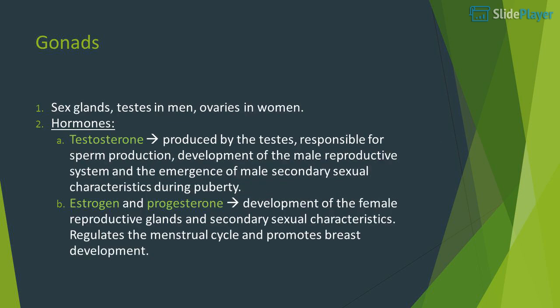Gonads (sex glands): testes in men and ovaries in women. Hormones: testosterone is produced by the testes and is responsible for sperm production, development of the male reproductive system, and the emergence of male secondary sexual characteristics during puberty. Estrogen and progesterone are responsible for the development of the female reproductive glands and secondary sexual characteristics, and regulate the menstrual cycle and promote breast development.